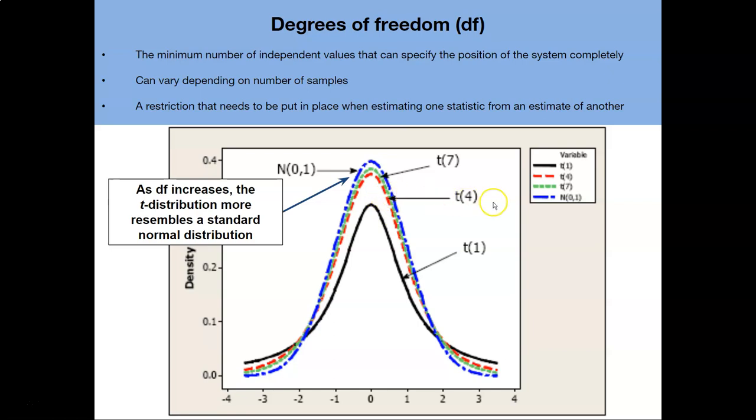And so what you see here in blue is the standard normal distribution. As we increase and get larger values of t you can see as we move from the black to the red to the green line our t distribution becomes more similar to the normal distribution.